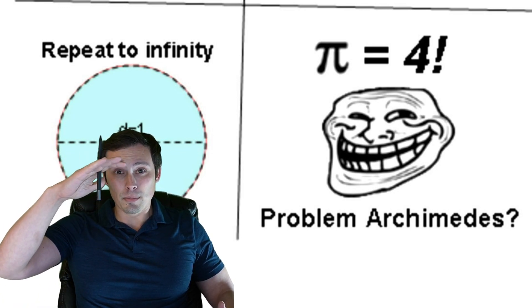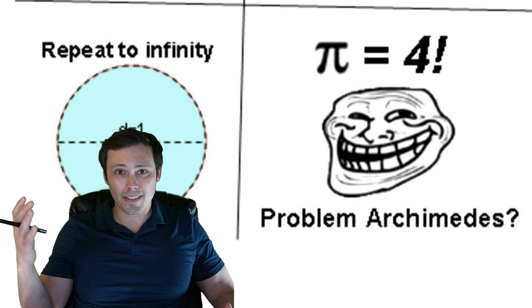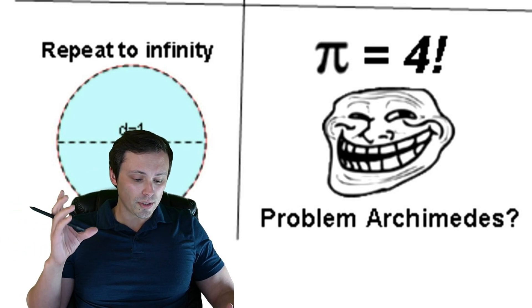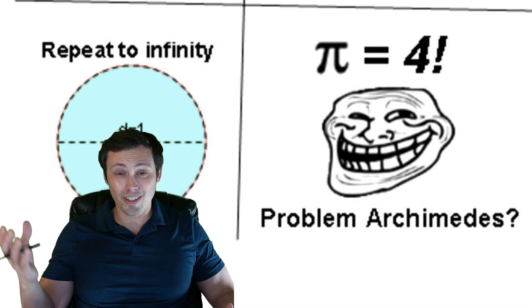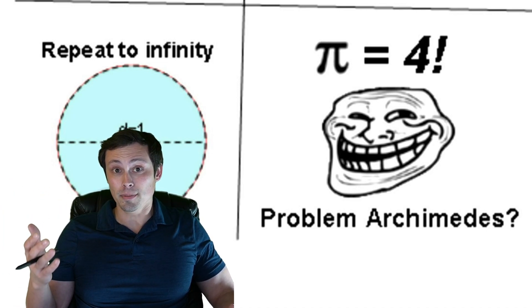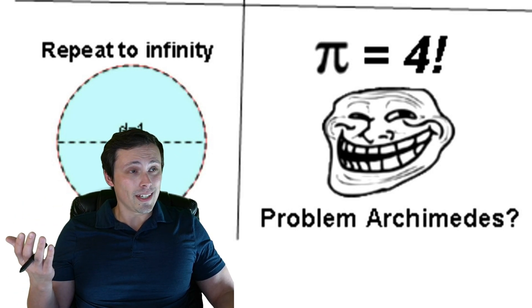That's a reference to the fact that Archimedes, ancient Greek mathematician, approximated π using polygons inside and outside of a circle that, as the number of sides increased to infinity—in other words, as they got bigger—the values of the perimeter of the polygons would approach the same thing as the circumference of the circle, and that's how he arrived at an approximation of π.